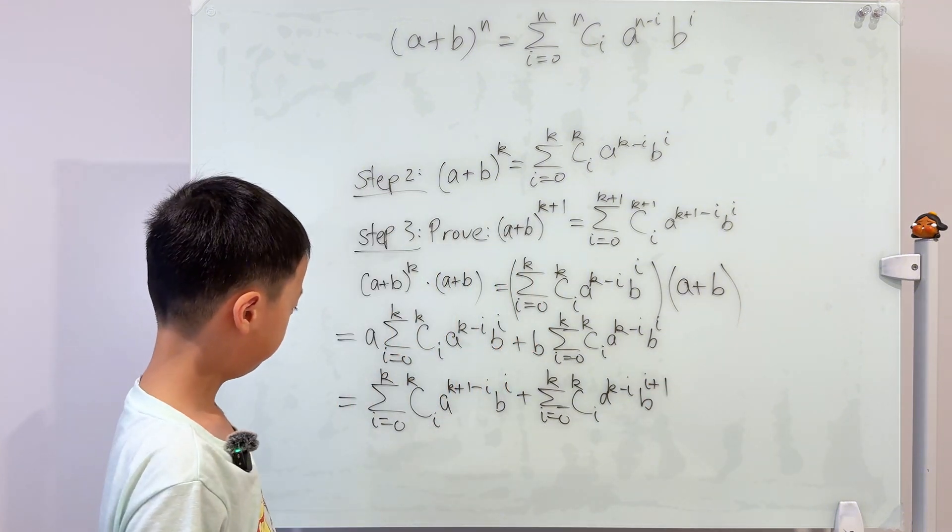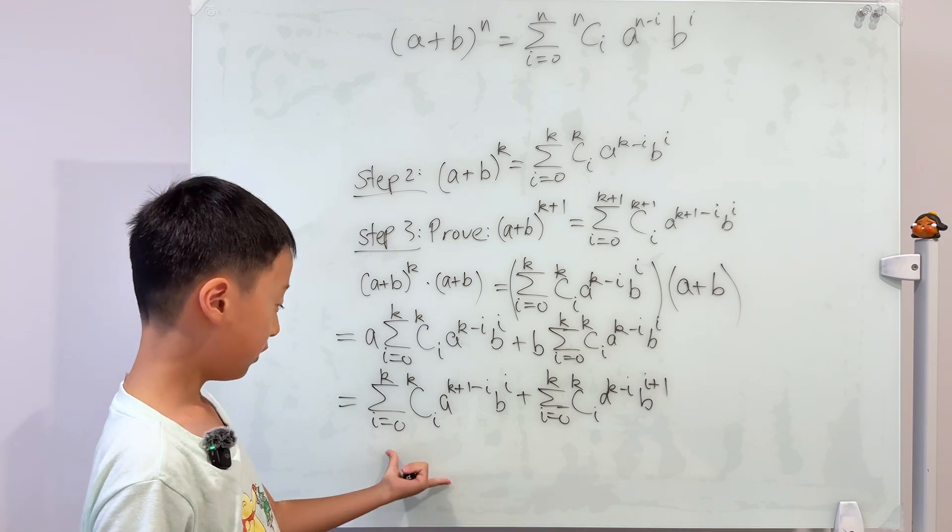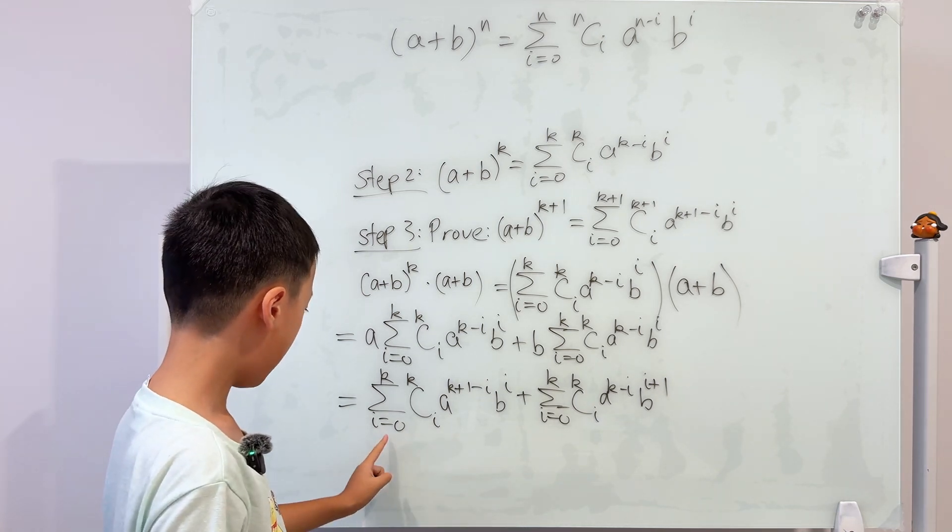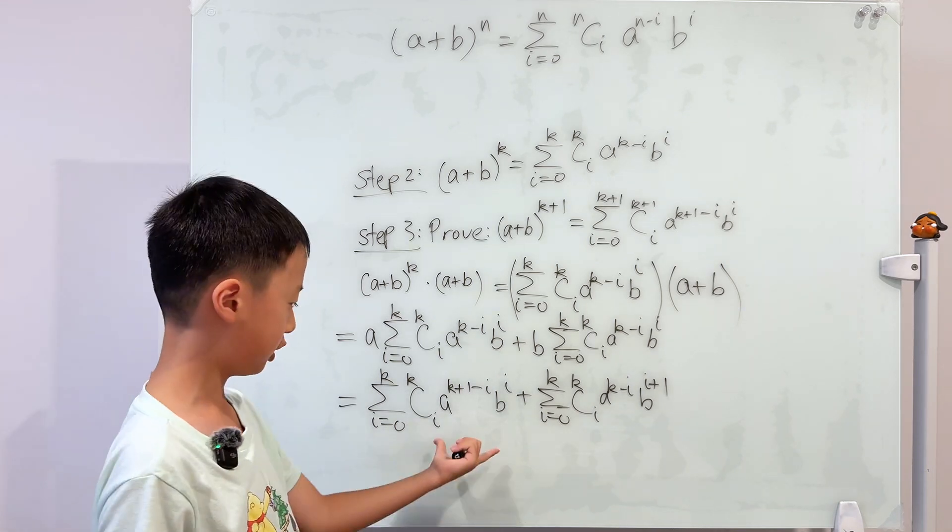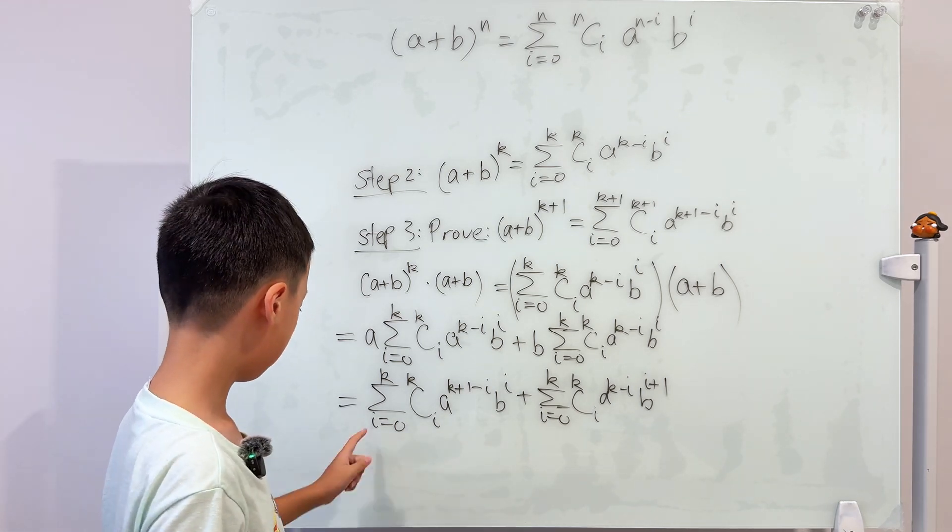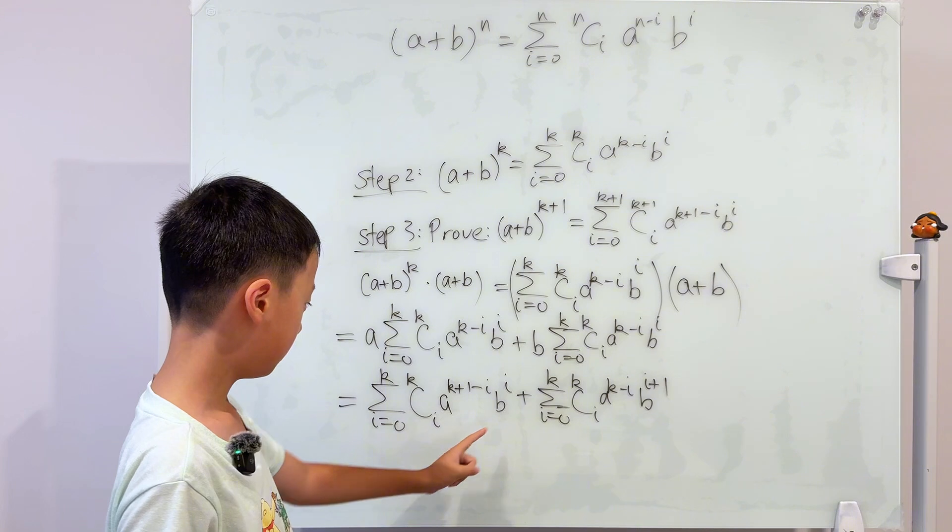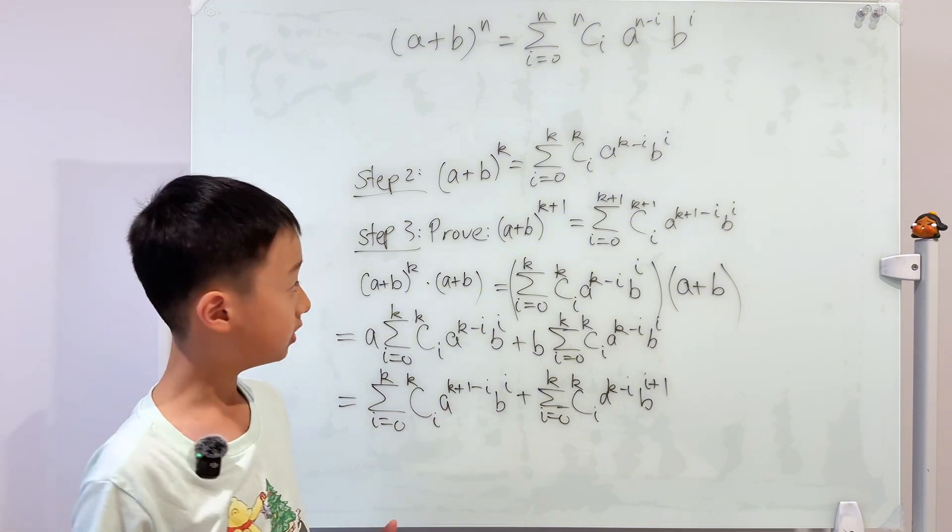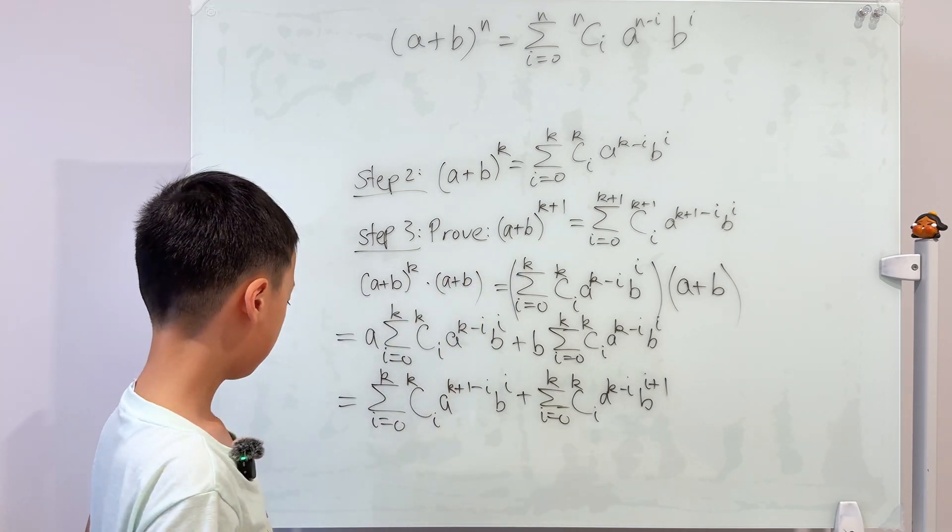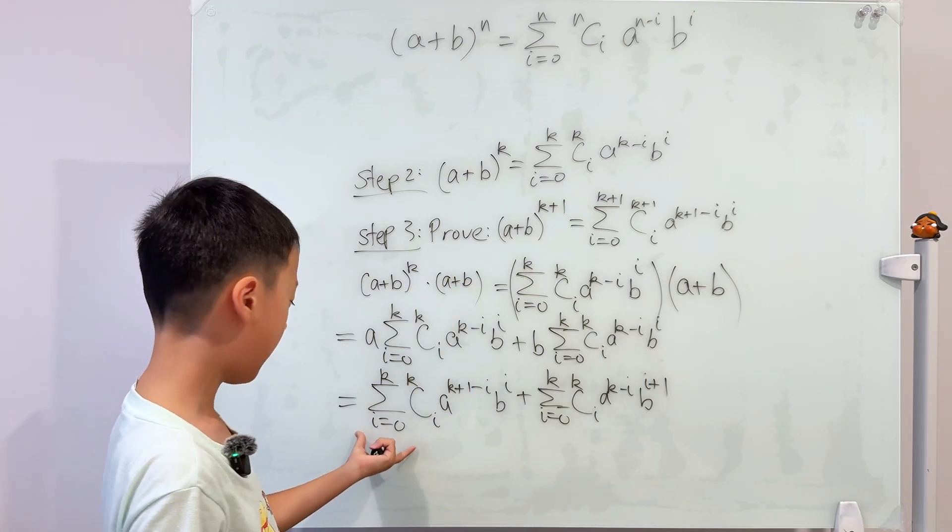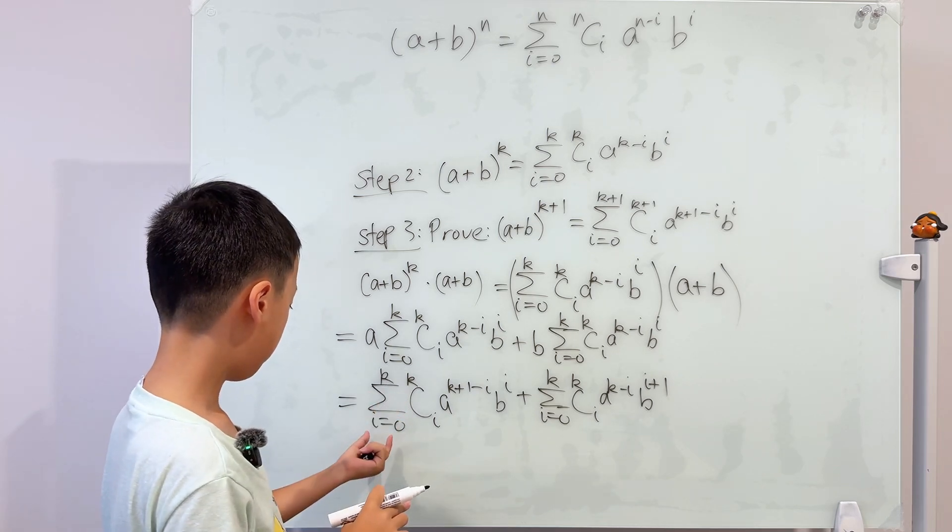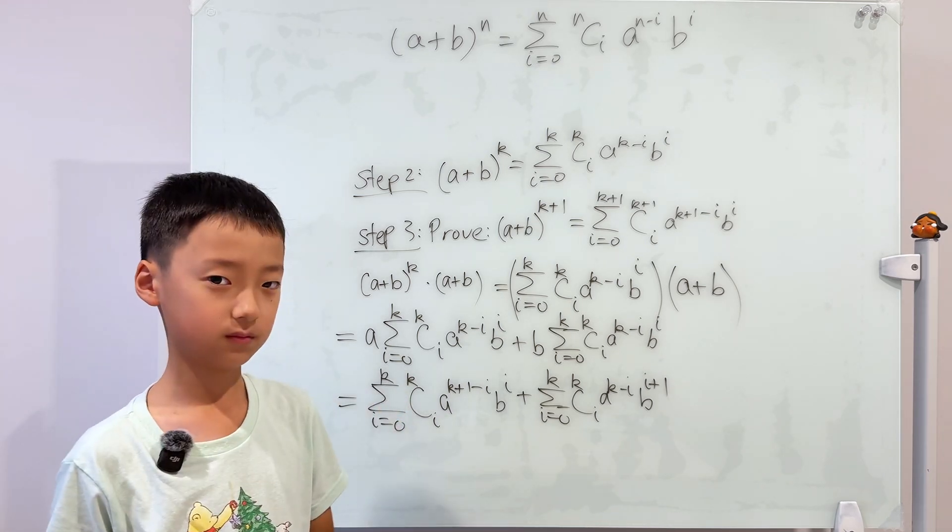What do we do from here? We need the first term from this thing. So then why don't we let i equals zero and see what the first term of this is. So when i equals zero, this is one and this is a to the power of k plus one. That's good, right? It's the same first term. So then why don't we take out the i equals zero term, and then you add from i equals one to k.